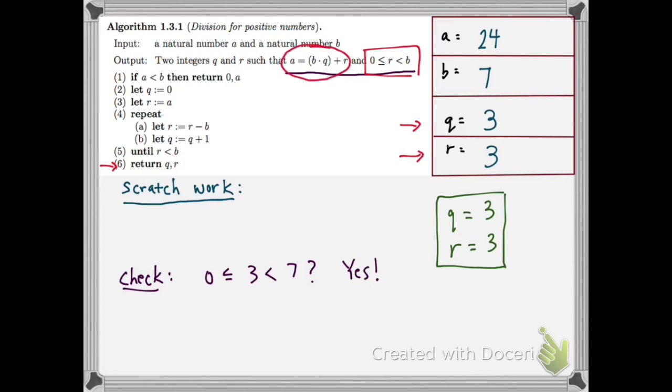And this other condition is A equal to B times Q plus R. So is 24 equal to 7 times 3 plus 3? Well, 21 plus 3 is 24, and so we get yes there as well.